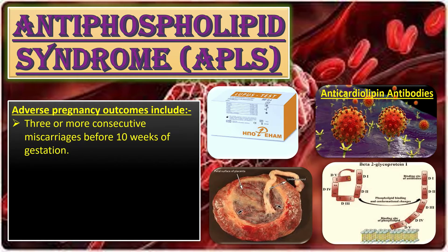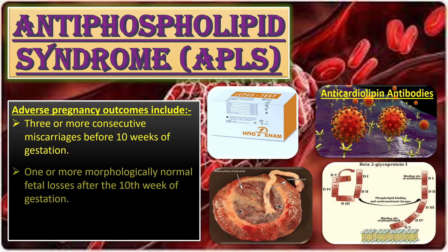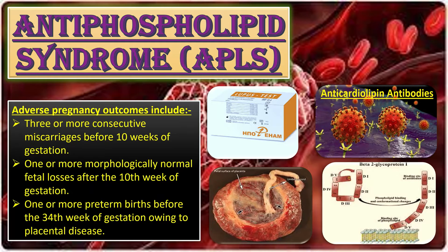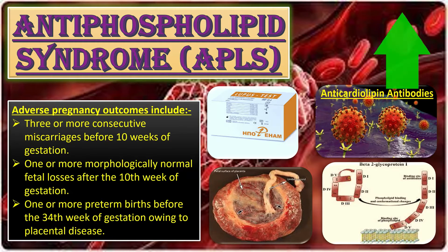The adverse pregnancy outcomes associated with antiphospholipid syndrome include: three or more consecutive miscarriages before 10 weeks of gestation, one or more morphologically normal fetal losses after 10 weeks of gestation, and one or more preterm births before 34 weeks of gestation owing to placental disease. For a complete discussion of APS, see the link in the top right corner of this video.